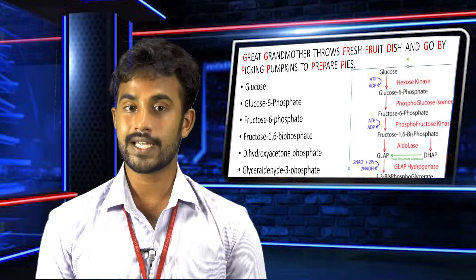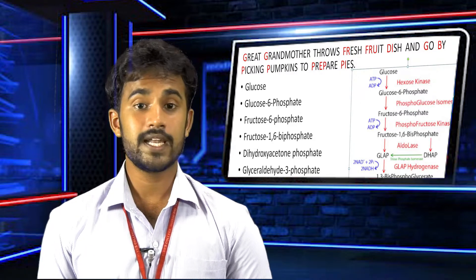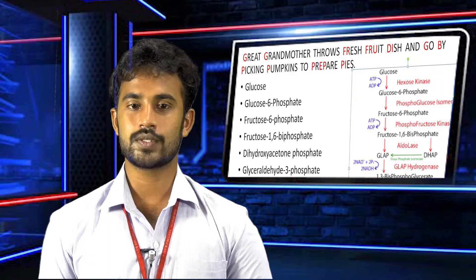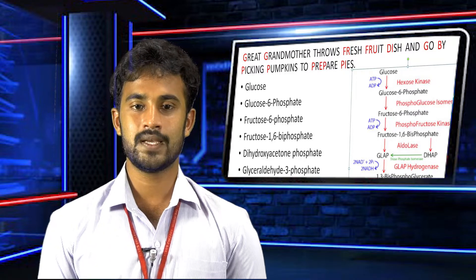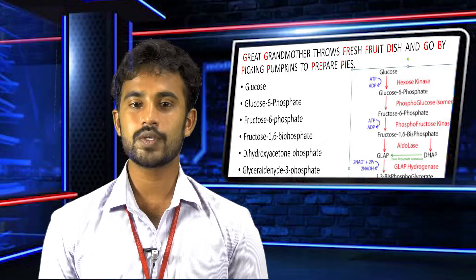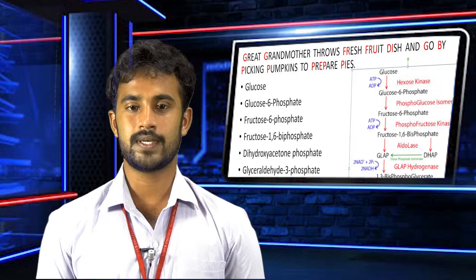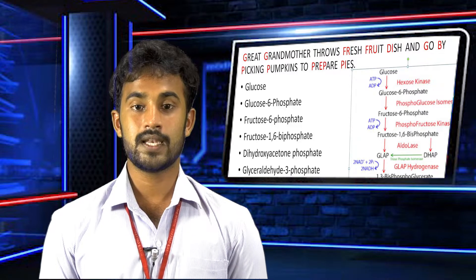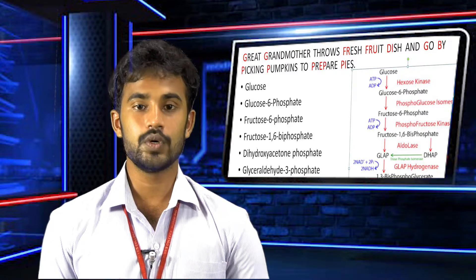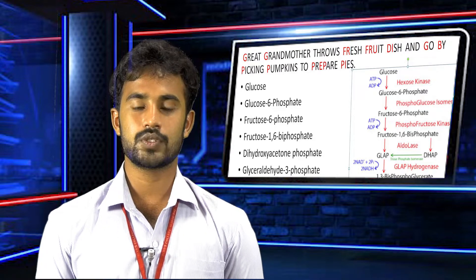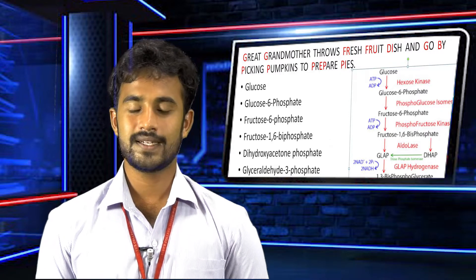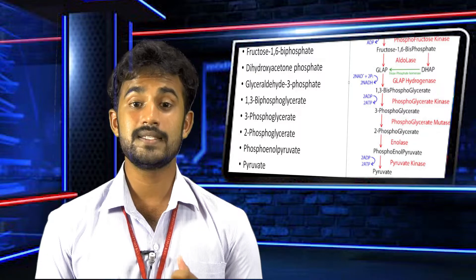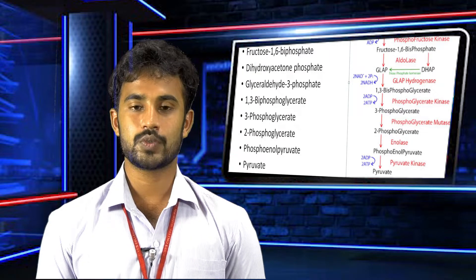Let's talk about intermediates. The first intermediate involved in the glycolysis pathway is glucose — that is G. Then one more G: glucose 6-phosphate. Then FR: fructose 6-phosphate. Then FRU: fructose 1,6-bisphosphate. Then DI: dihydroxyacetone phosphate. Then G: glyceraldehyde 3-phosphate.